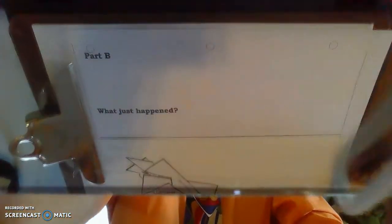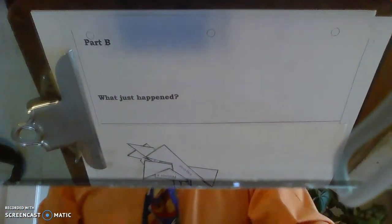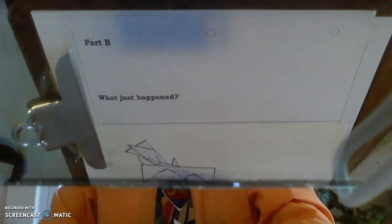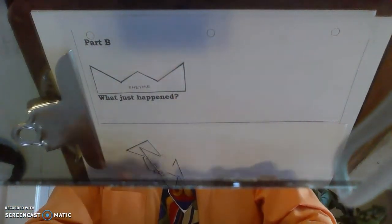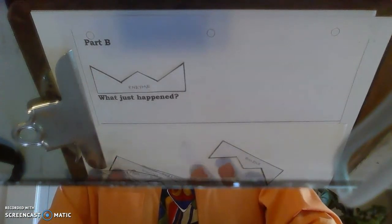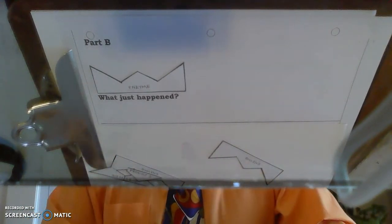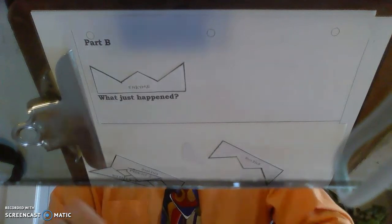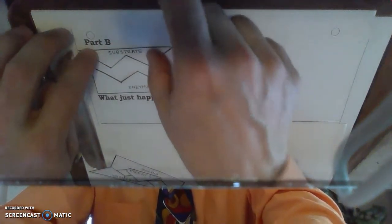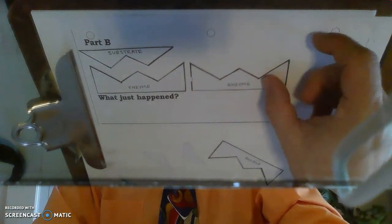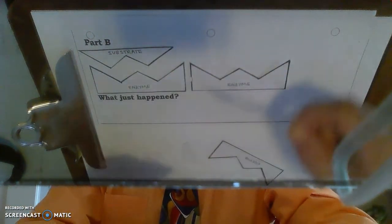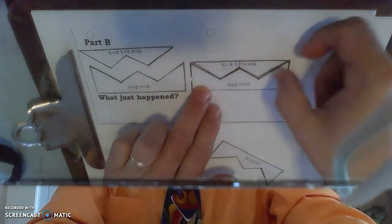On the page of the activity that looks like this, in part B, I need to glue down the enzyme and the substrate. Now, in that first part of the equation, it just says enzyme plus substrate. So that means they're probably kind of separate, right? And then, in the second part, it's the enzyme-substrate complex. So that means they're kind of together, right?